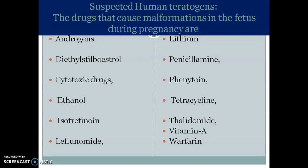Suspected human teratogens are drugs that cause malformations in the fetus during pregnancy. These drugs, which are absolutely contraindicated in pregnancy, include androgens, diethylstilbestrol, cytotoxic (anticancer) drugs, ethanol, isotretinoin, leflunomide, lithium, penicillamine, phenytoin, tetracyclines, sulfonamides, Vitamin A, and warfarin.